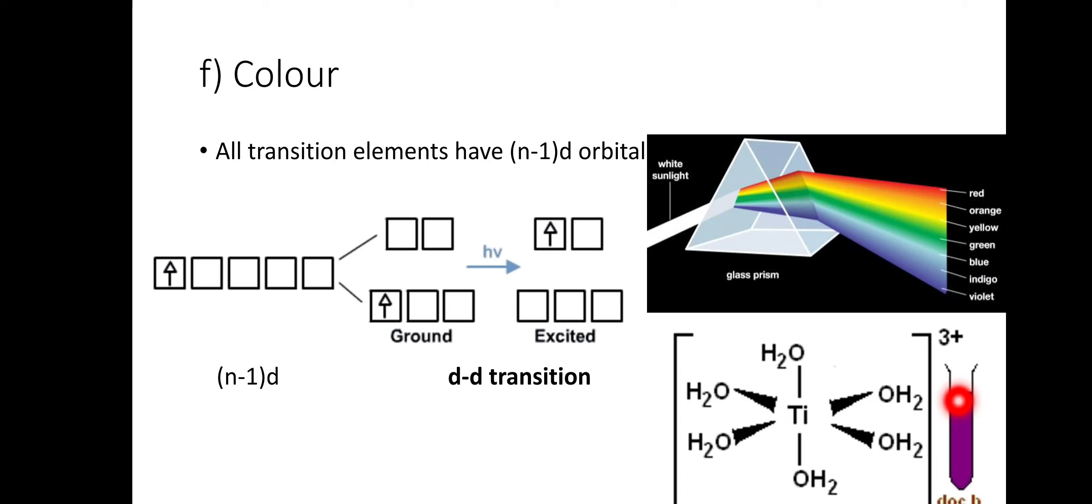Ti(H2O)6^3+ ions look violet in color because they absorb yellow color and transmit blue and red light. So the violet color is produced.